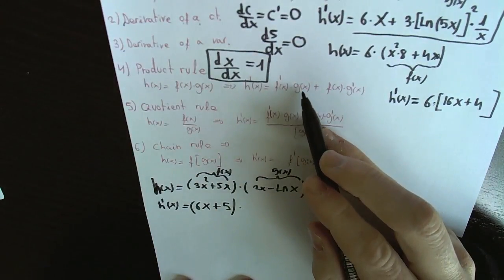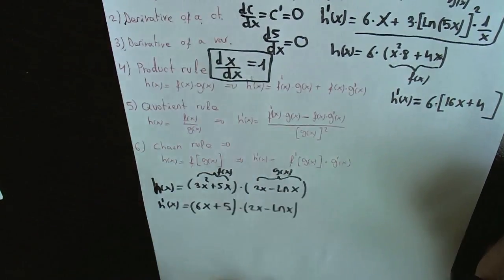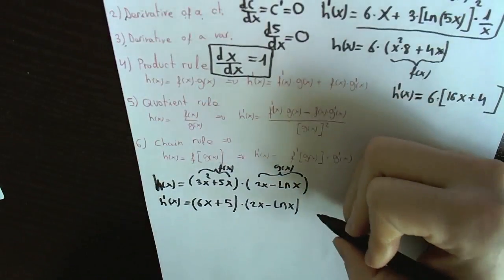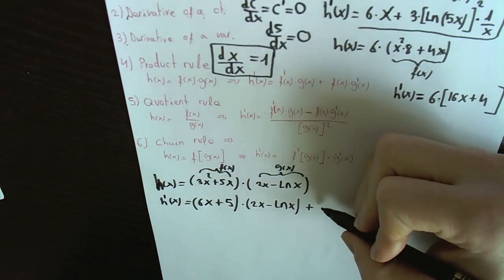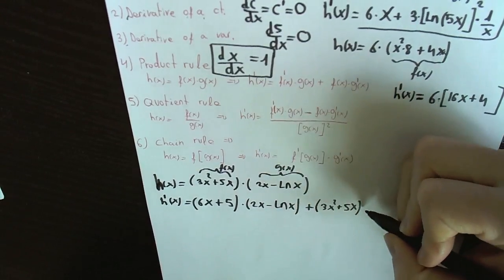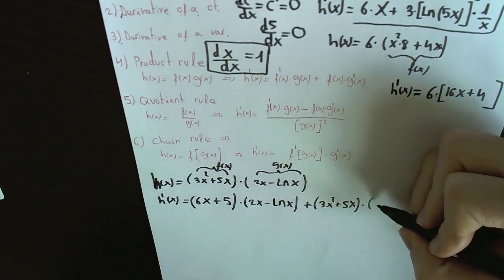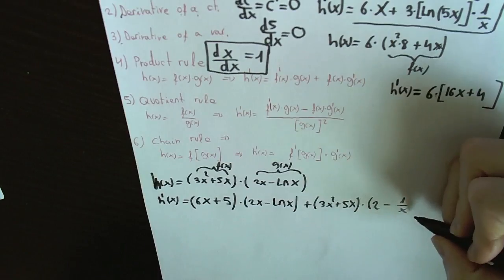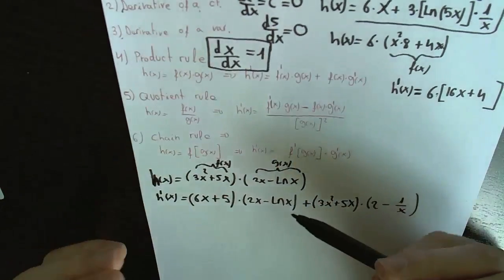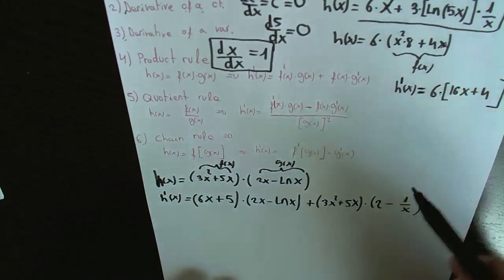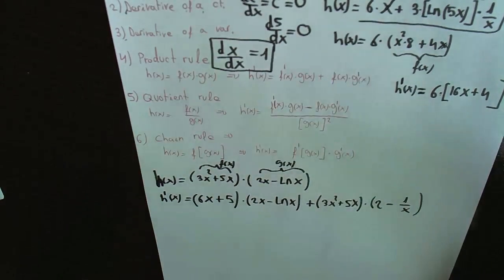Then we multiply by g(x) as it was before: 2x minus logarithm of x. Then we add the first function without derivative — 3x squared plus 5x — multiplied by the derivative of the second function: the derivative of 2x is 2, and the derivative of logarithm of x is 1/x. This is the derivative of the product, and simplifying would give the final answer, though much harder to compute directly.